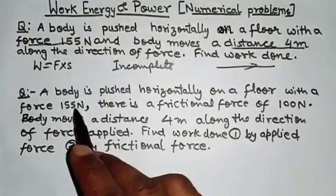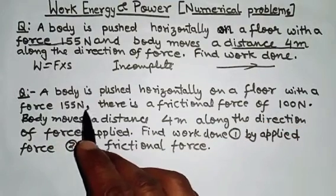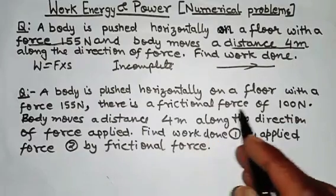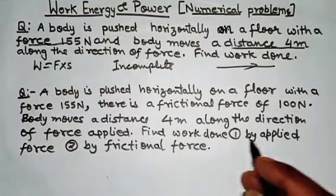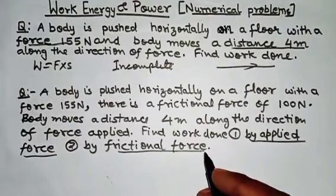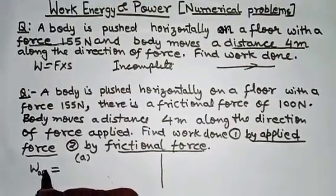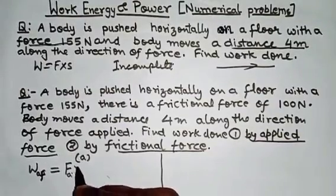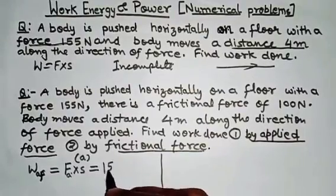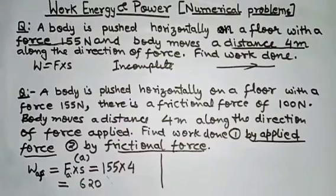Now I have rewritten the same question correctly. A body is pushed horizontally on a floor with a force of 155 Newton. There is a frictional force of 100 Newton. The body moves a distance of 4 meters along the direction of force. Find work done by the applied force and by frictional force. Part A — work done by applied force: W = F_applied × displacement = 155 × 4.